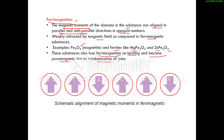The meaning of randomization of spins: in ferrimagnetic substances, domains are arranged in anti-parallel directions in unequal numbers. When heated, these domains are destroyed and only random motion of electrons remains, converting the substance into a paramagnetic material. The diagram shows anti-parallel alignment in unequal numbers — for example, three domains pointing up and one pointing down. This is all about solid state magnetic properties. I hope you understood the topics we discussed. Thank you.